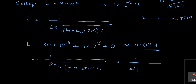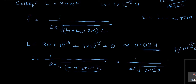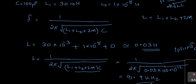Substituting into f = 1/(2π√((L1+L2+2M)·C)): M is 0, L1 plus L2 is 0.03, and C is 100 pF, which is 100×10⁻¹² farad. After unit conversion and calculation, the frequency of oscillation is 91.9 kHz. So the Hartley Oscillator frequency of oscillation equation is f = 1/(2π√((L1+L2+2M)·C)).